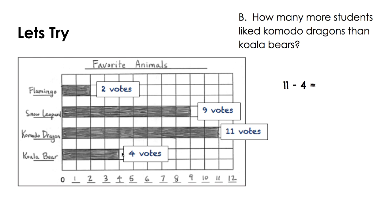I'm going to count these empty boxes to make sure that we get the correct answer. So I see one, two, three, four, five, six, seven. If you said 11 minus 4 is 7 more students voted for Komodo dragon than koala bear, you are right on track. Way to rock.